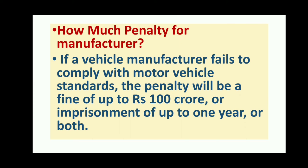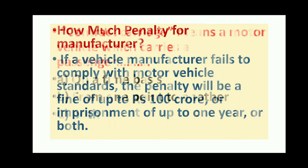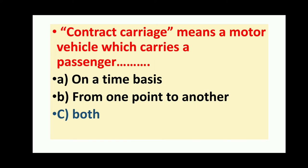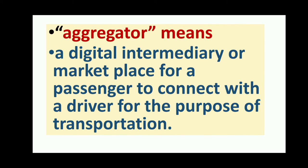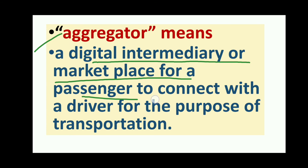What is the penalty for a manufacturer? If a vehicle manufacturer fails to comply with motor vehicle standards, the penalty will be a fine up to 100 crore rupees or imprisonment up to one year or both. Contract carriage means a motor vehicle which carries a passenger on a time basis from one point to another. Aggregator is a new concept inserted in 2019, meaning a digital intermediary or marketplace for a passenger to connect with a driver for transportation.